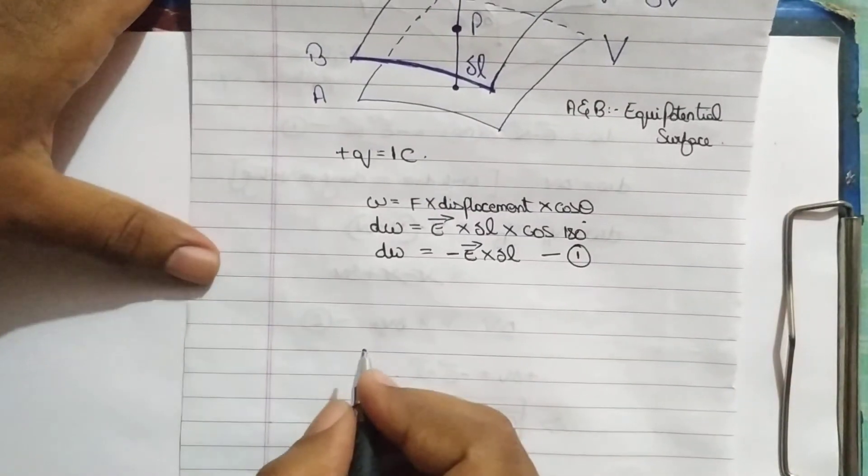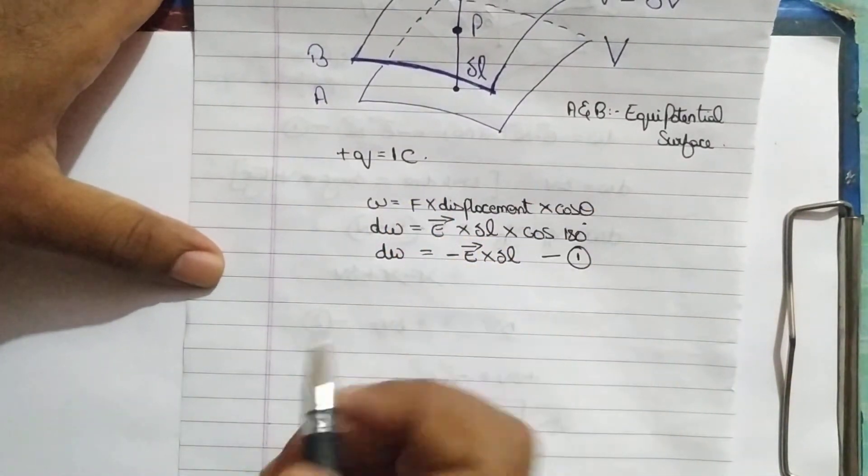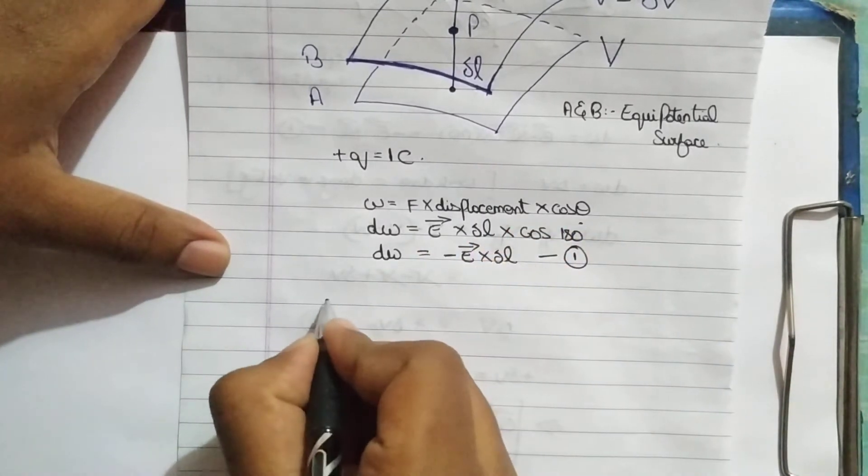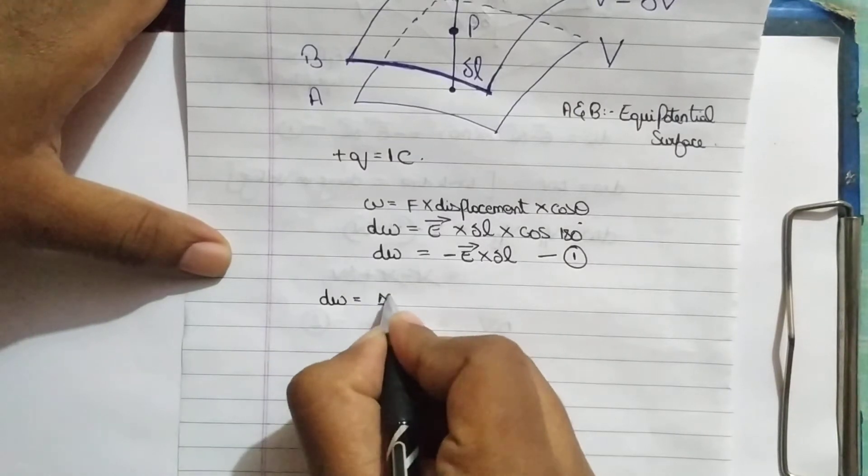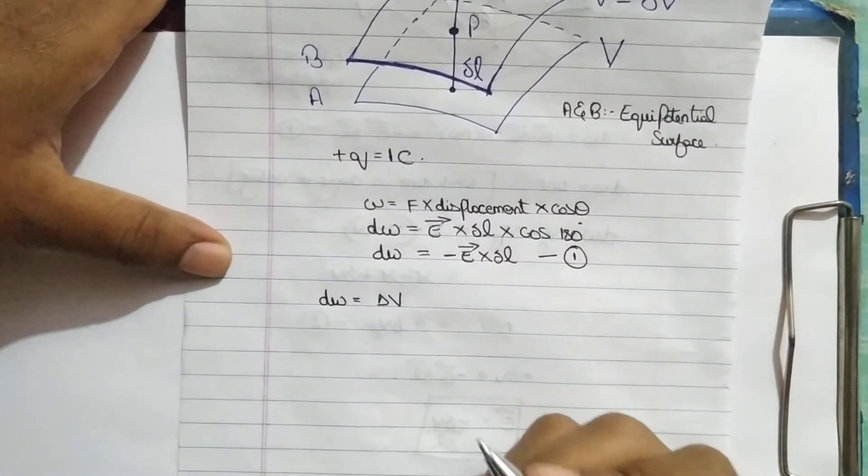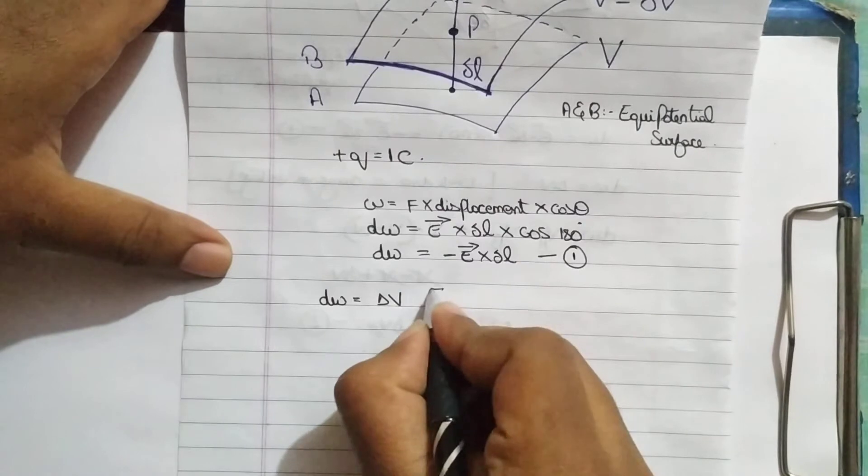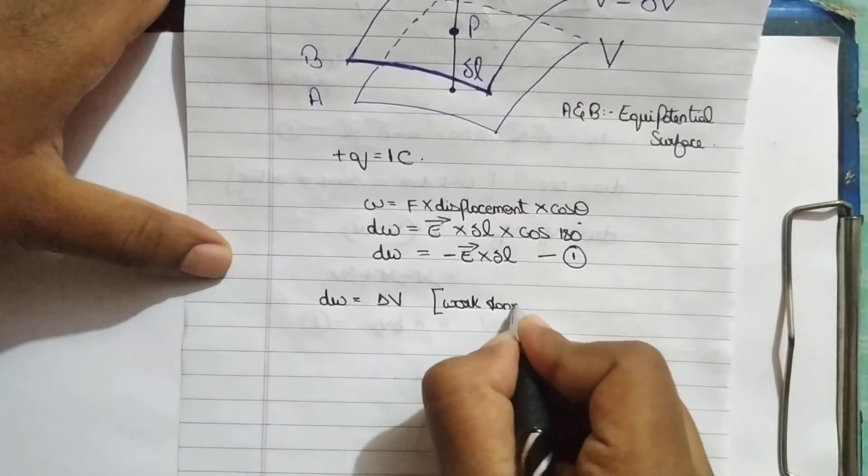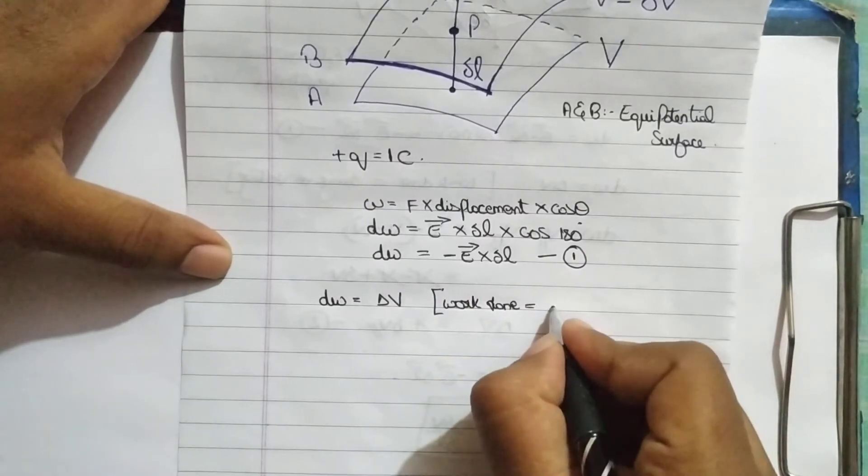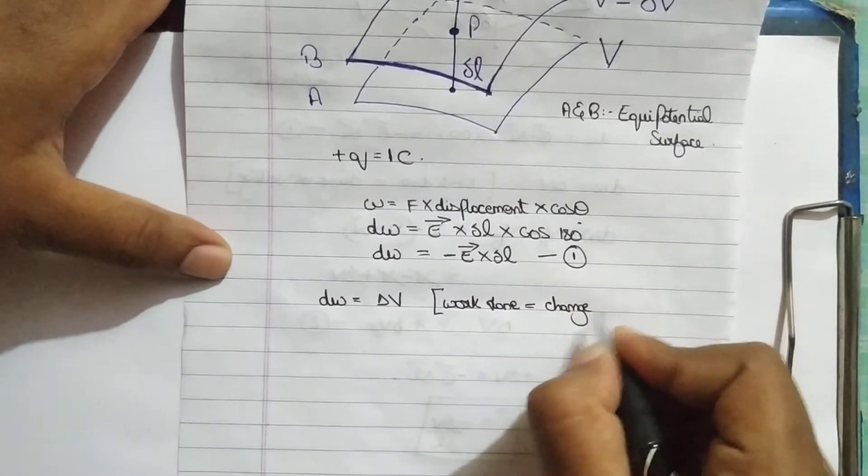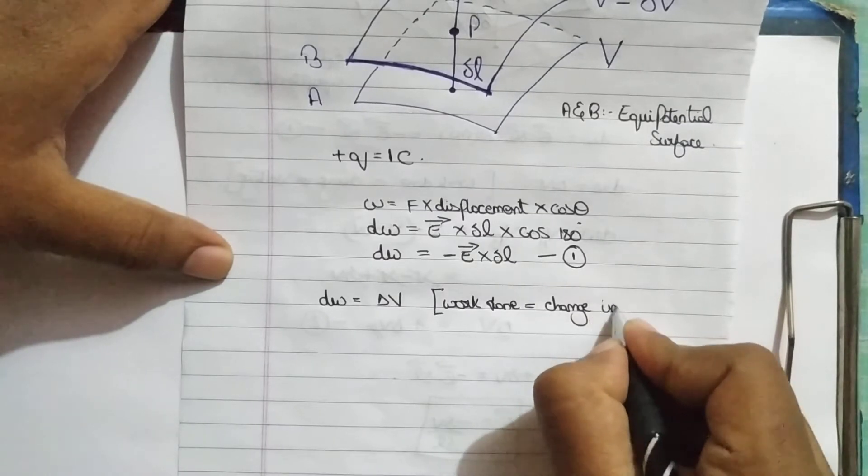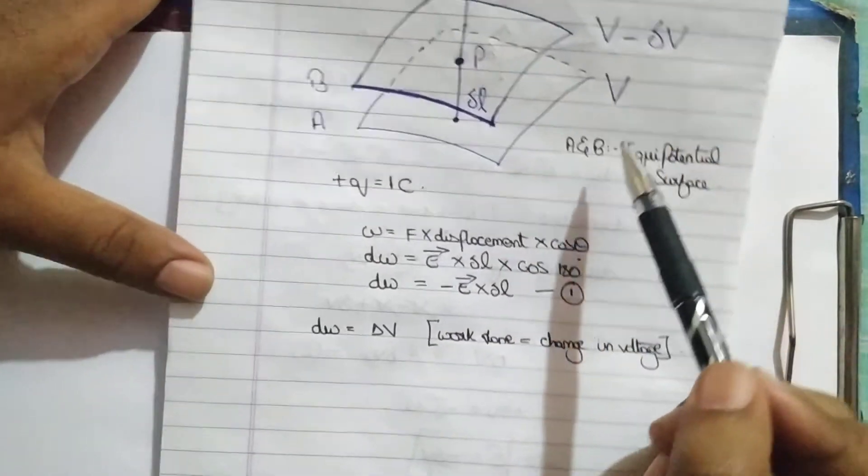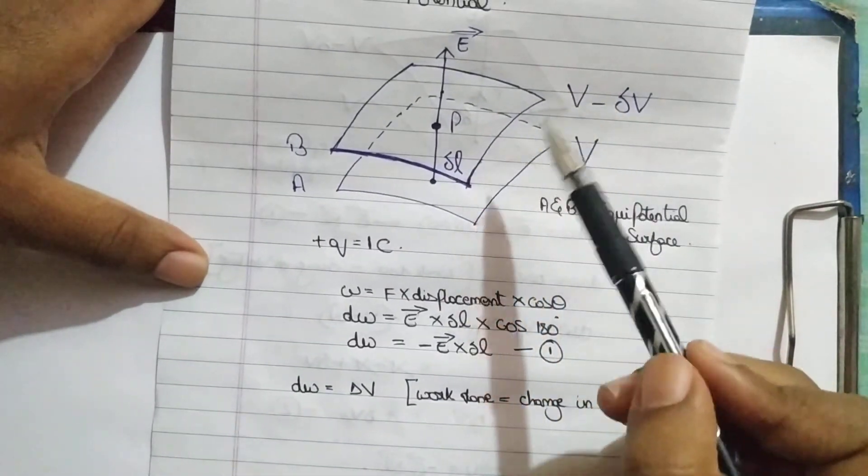If you have introduced yourself to chapter 2, that is electrostatic potential and capacitance, you guys will know work done is nothing but change in voltage. Work done is also given in the form of change in voltage. The change in voltage is delta V.